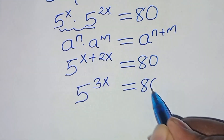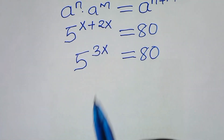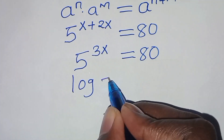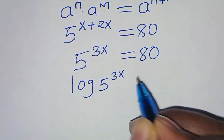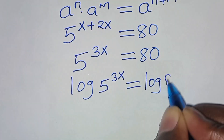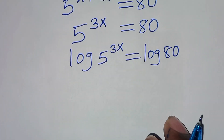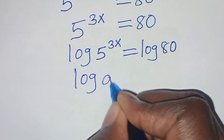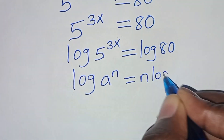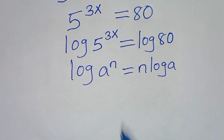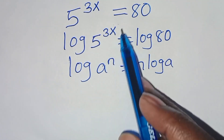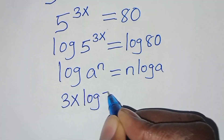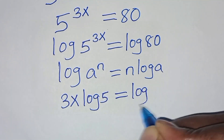To solve for x, we introduce logarithms on both sides, so we have log of 5 to the power 3x equals log 80. We find that log of 5 to the power 3x is in the form of log a to the power n, which we can express as n times log a. Applying this power rule property, 3x log 5 equals log 80.